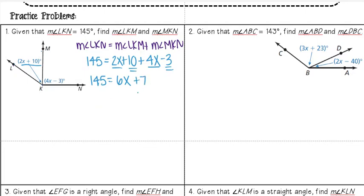I want to get x by itself, so I'm going to subtract 7 from both sides. When I do 145 minus 7, I get 138, and then I'm going to divide both sides by 6. 138 divided by 6 gives me 23.